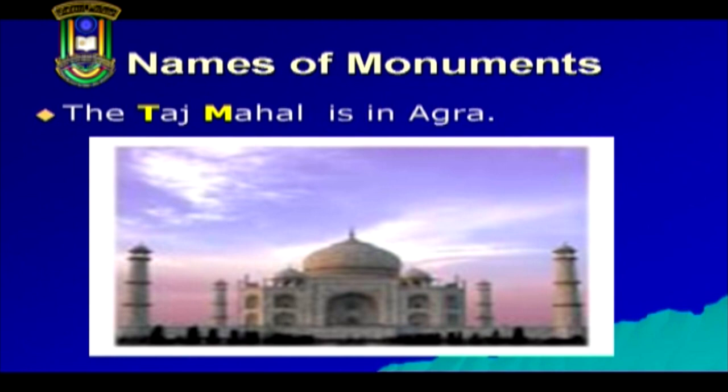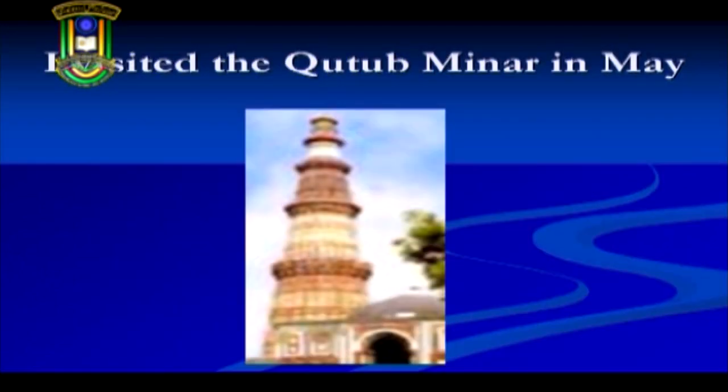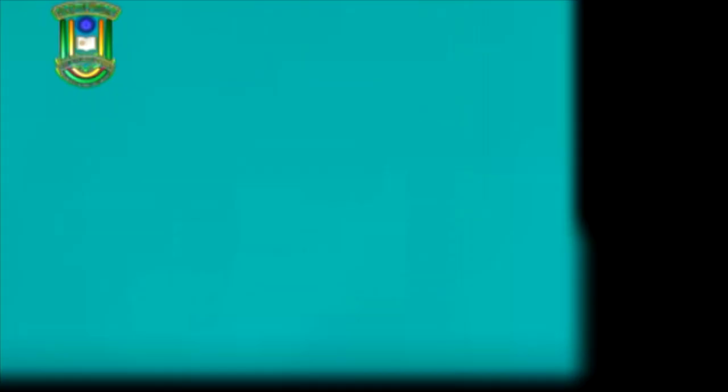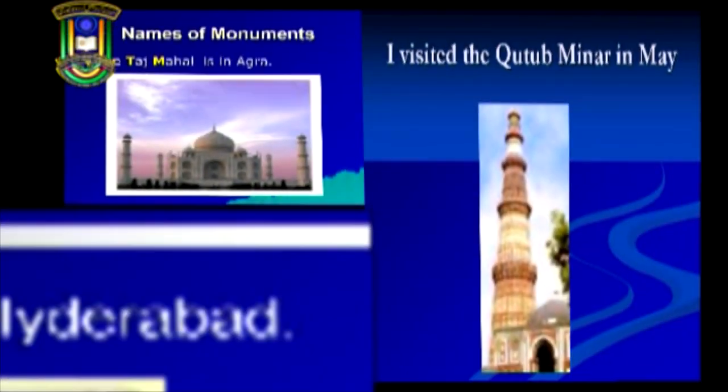Now let us see how capital letters are used to indicate names of monuments. The Taj Mahal is in Agra. I visited the Qutab Minar in May. The Char Minar is in Hyderabad. Taj Mahal, Qutab Minar, and Char Minar are all names of historical monuments. The C of Char Minar is capitalized, T and M of Taj Mahal are capitalized, and Qutab Minar is written with a capital Q and a capital M.